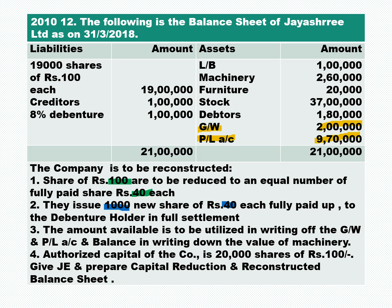The liability cancelled by the debenture holder is 60,000. We need to pay 1 lakh to debentures. In place of 1 lakh, we give 40,000 worth of equity shares — we are paying them not by cash but by equity shares. 1,000 shares into 40 rupees gives us 40,000 share value. The remaining 60,000 is called capital reduction. The amount available is to be utilized in writing off goodwill and P&L account.